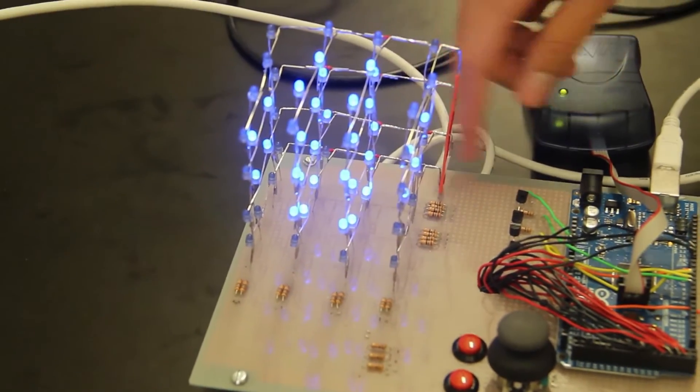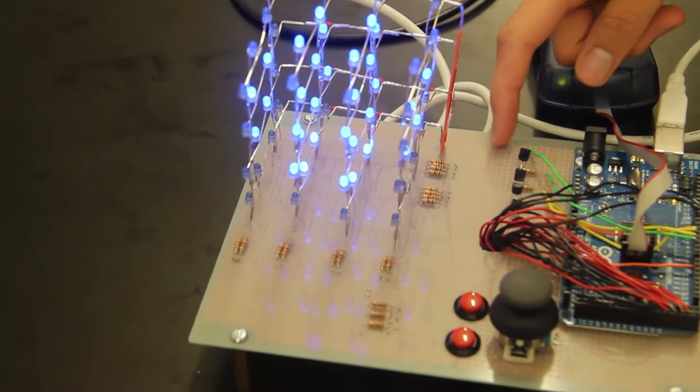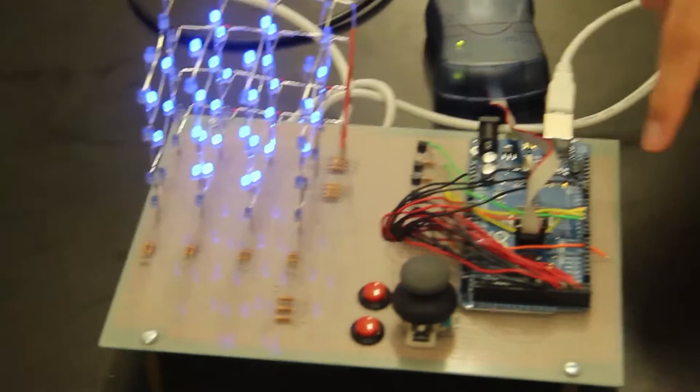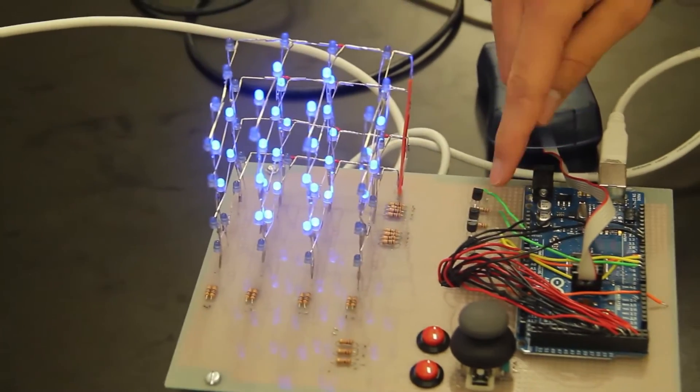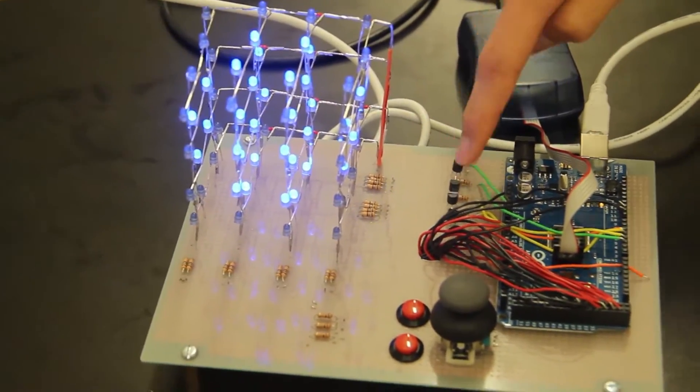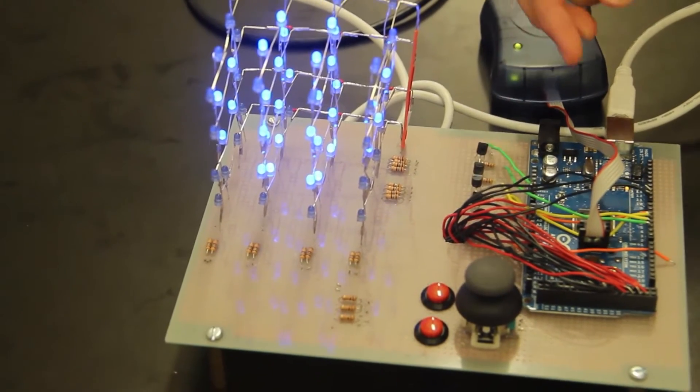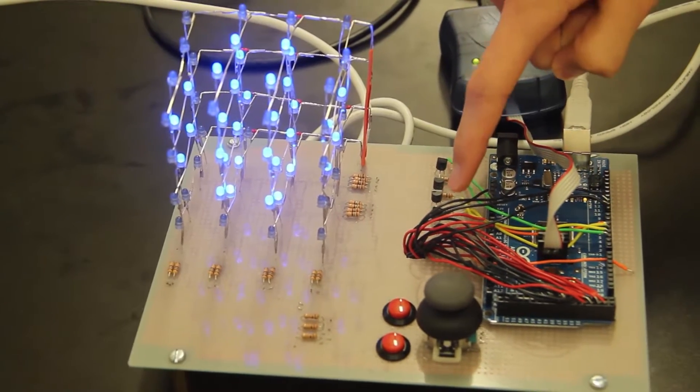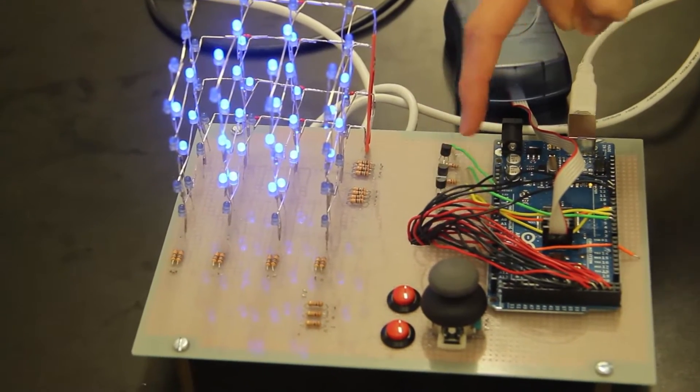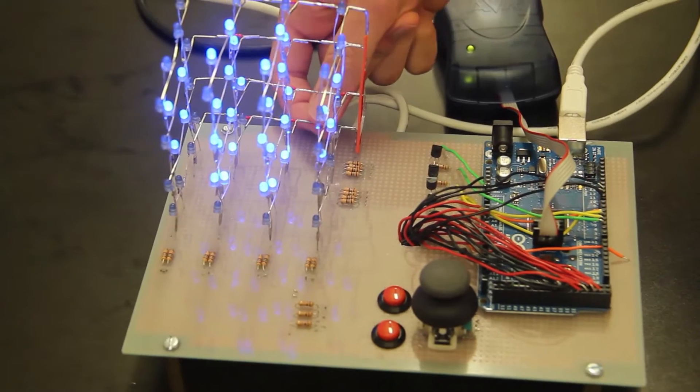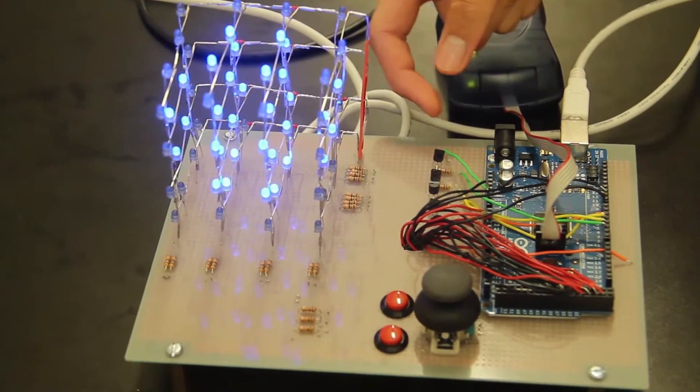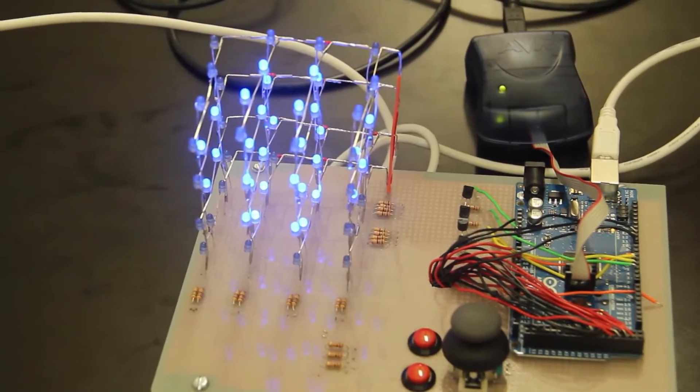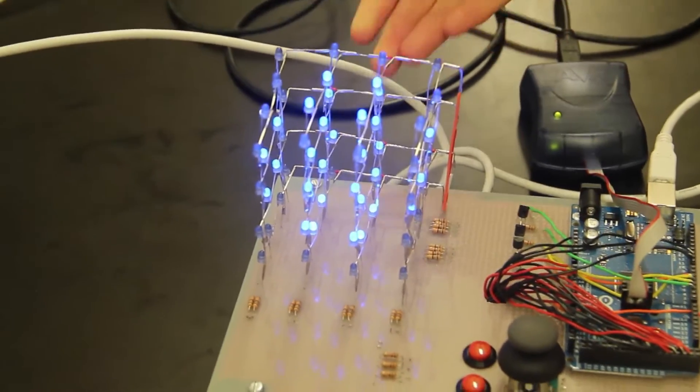And the cathode layer, each cathode then goes to a transistor. And each transistor also goes to an Arduino pin. So the Arduino can then control whether the transistors are open, essentially. I'm only using it like a switch. So basically these transistors then divert the cathode layers to ground. So if it's not grounded, you won't see that layer lit. If it is grounded, then it is.